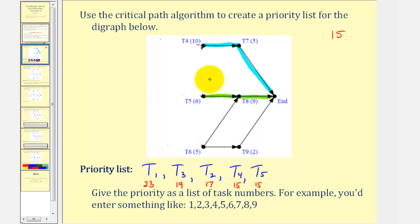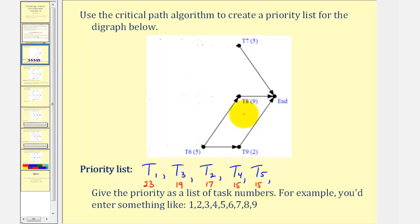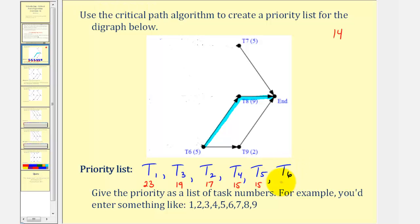Now we eliminate both task four and five from the digraph and find the critical path again. The path from seven to the end only has five hours, so it makes sense that the critical path starts at task six, which takes five hours as well. From task six to eight to the end has a total time of fourteen hours — there's no other path longer. From six to nine to the end only takes seven hours. So we add task six to the priority list with a path of fourteen hours.